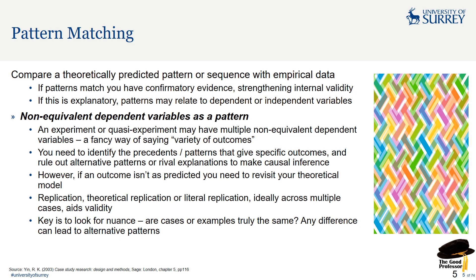Non-equivalent dependent variables as a pattern means an experiment or quasi-experiment may have multiple non-equivalent dependent variables — a fancy way of saying you've got a variety of outcomes. You need to identify the precedents — what comes before — patterns that give specific outcomes, and rule out alternative patterns or rival explanations to make your causal inference. Your theory needs to explain: if this comes before, you get that pattern.